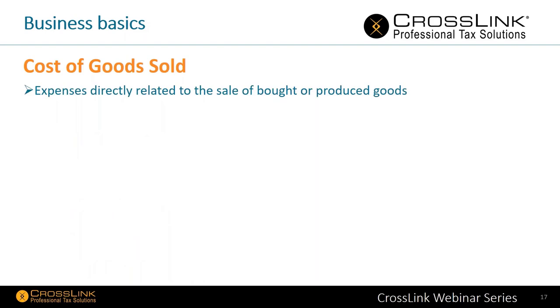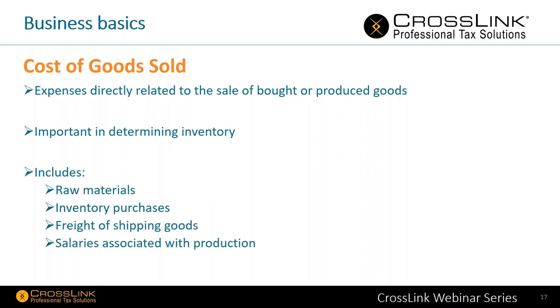Cost of goods sold refers to expenses directly related to the sale of bought or produced goods. It's important in determining inventory, and includes raw materials, freight or shipping of goods, inventory purchases, and salaries associated with production. All of these are things your business clients will bring to you as part of completing a business return in our software.